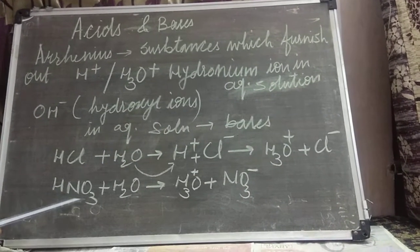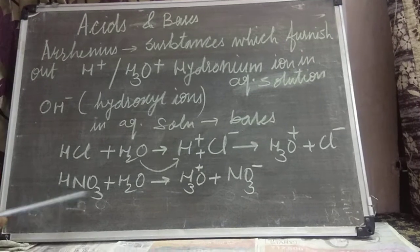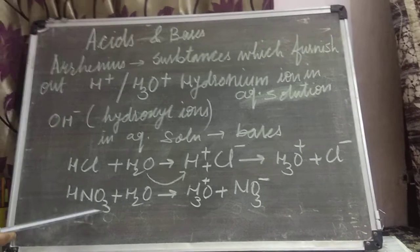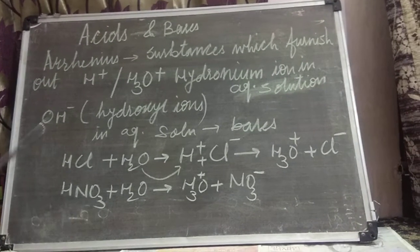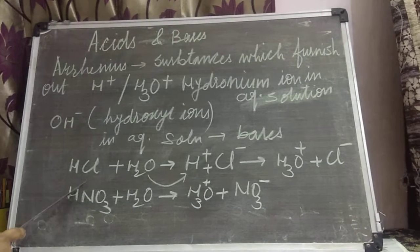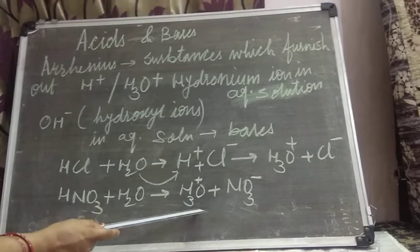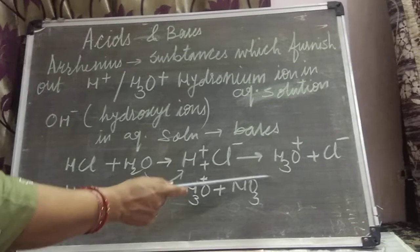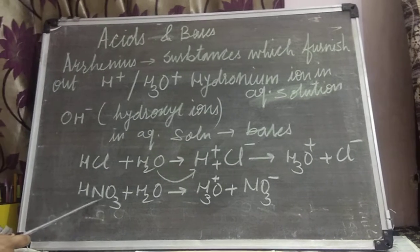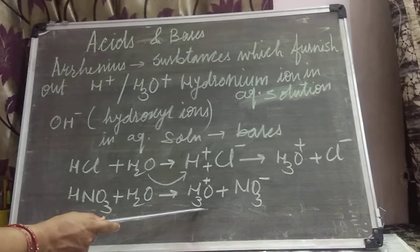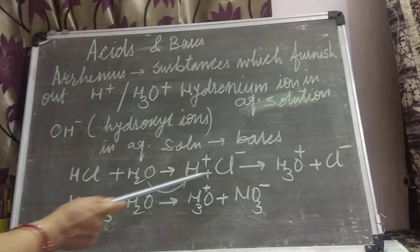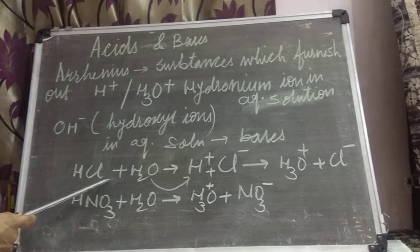Similarly, HNO₃ nitric acid dissolved in water: H⁺ and NO₃⁻ split out into ions. Here also H₂O takes the H⁺ forming H₃O⁺, and the nitrate NO₃⁻ ion comes out. Since HNO₃ is furnishing out H₃O⁺ ion, that's why it is acid. HCl is furnishing out H₃O⁺ or H⁺ ion — that's why it is acid.